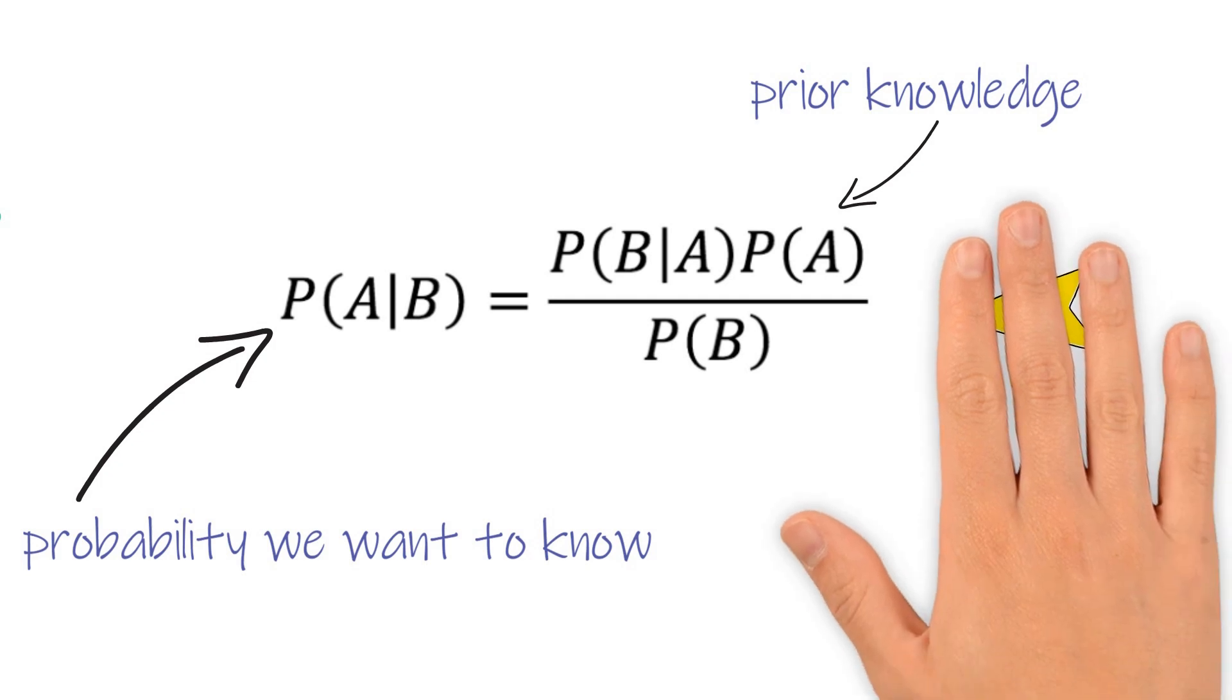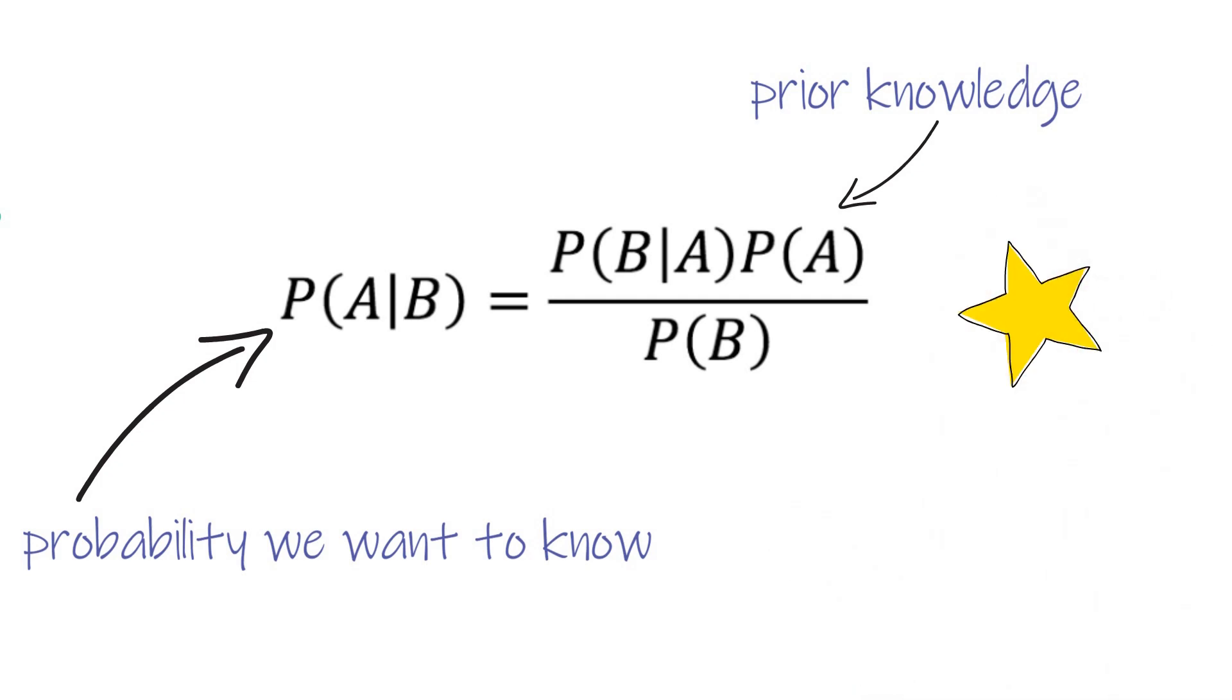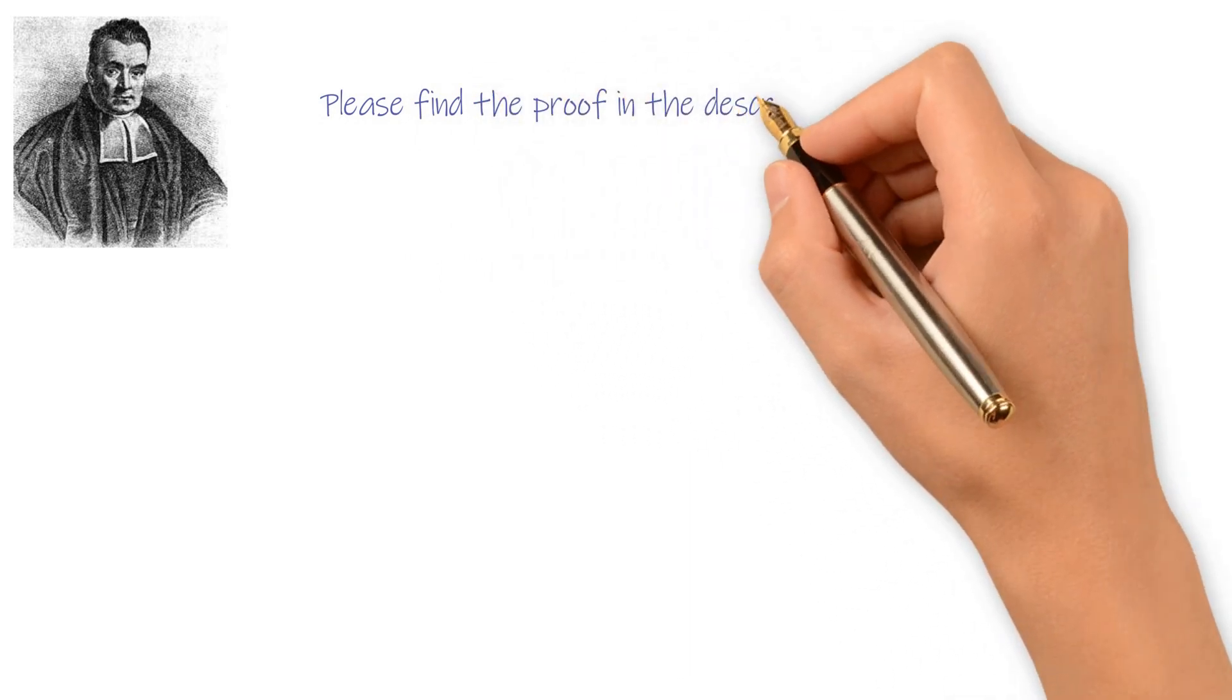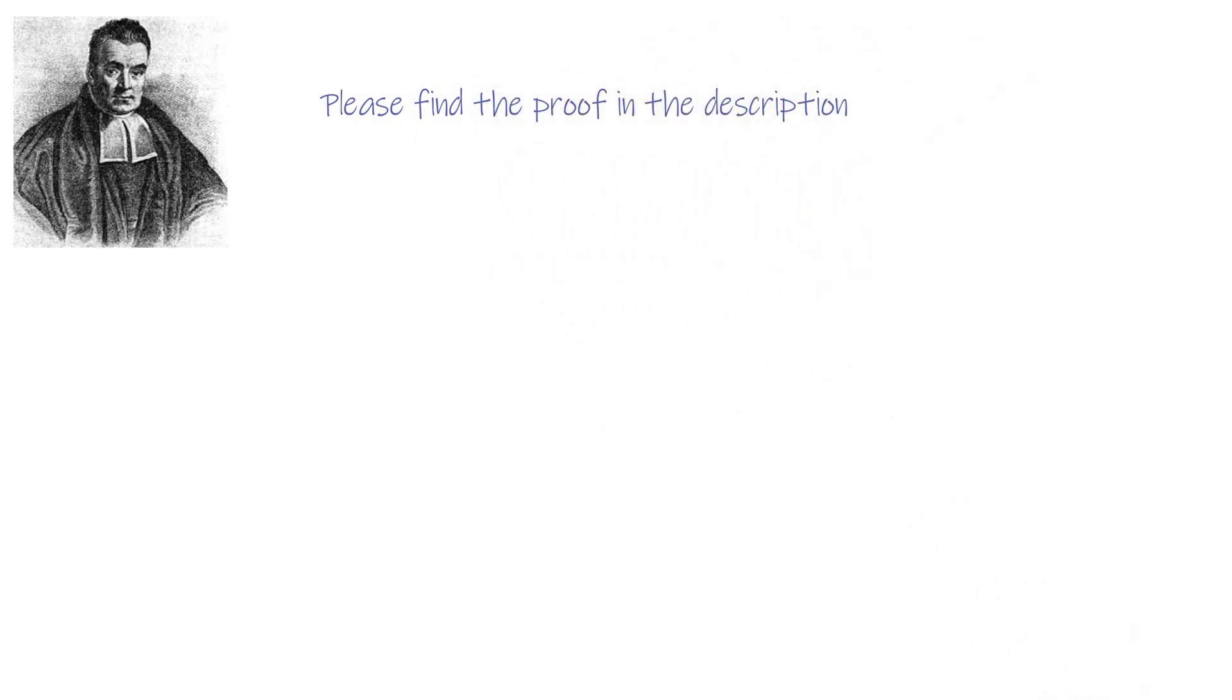The Bayes' theorem perhaps the most important formula in probability. It comes from conditional probability formula, and named after Reverend Thomas Bayes. I've written down the proof in the description. It is quite simple actually. If you are interested, please have a look.